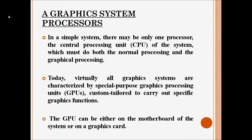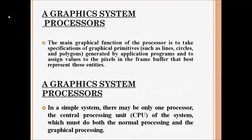First, let's look at the processor. In a simple graphics system there will be only one processor — the central processing unit — which can do both normal and graphics processing. Today's graphics systems, along with the CPU, also contain special-purpose graphics processing units, or GPUs, which are custom-tailored to carry out specific graphics functions. GPUs can be located either on the motherboard or on the graphics card.